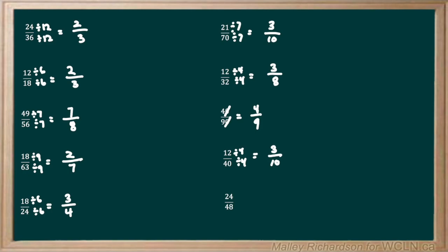In our last example we have 24 over 48. This one might be a bit tricky because it's not in our common multiples table. So let's start by dividing by what we know to be our highest multiple. We know that 12 can go into both 24 and 48, so let's divide our top and bottom by 12. 24 divided by 12 is 2 and 48 divided by 12 is 4. Now we're left with 2 over 4, but 2 over 4 can be reduced down further if we divide the top and bottom by 2. 2 divided by 2 is 1 and 4 divided by 2 is 2. 1 half can't be reduced down any further, so 1 half is our final answer.